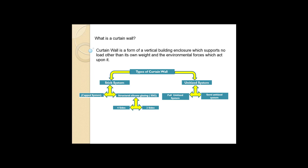We also have structural silicone glazing — four-side structural glazing and two-side structural glazing. For unitized panels there are two types: full unitized panel and semi-unitized panel.